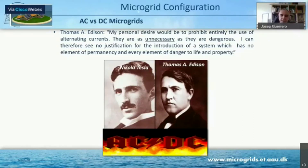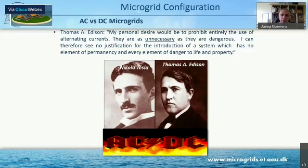It's not exactly that AC was dangerous. As you may know, he was killing, for instance, an elephant with 6,000 volts on AC. But that would happen the same if you used 6,000 volts on DC — you will kill the elephant anyway.